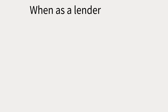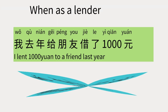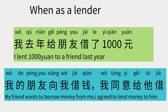When you are the lender, here are some examples: 我去年给朋友借了一千元。我的朋友向我借钱。我同意给他借。